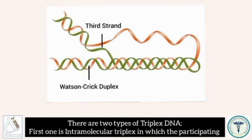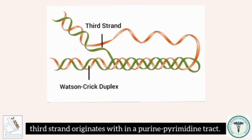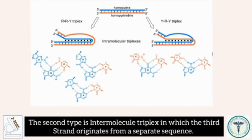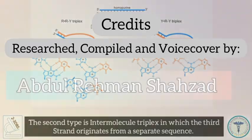There are two types of triple helix DNA. The first is intramolecular triple helix, in which the participating third strand originates within a purine-pyrimidine track. The second type is intermolecular triple helix, in which the third strand originates from a separate sequence.